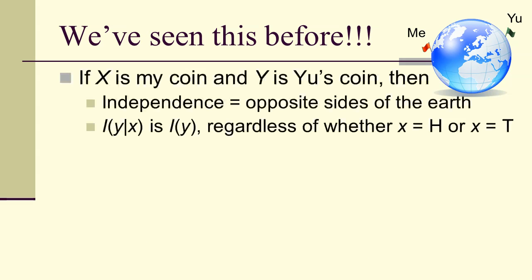We've seen this before: if x is my coin and y is your coin, then independence is modeled by the fact that we're on opposite sides of the earth. Therefore, the information from Y given X is just the information of Y — it doesn't matter what value x takes, because what happens with Y is independent of X.